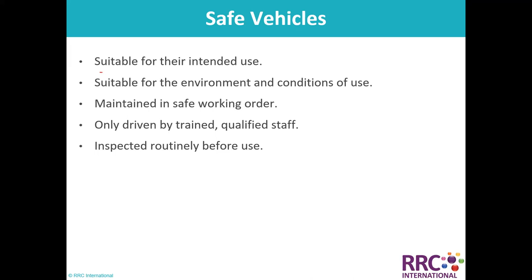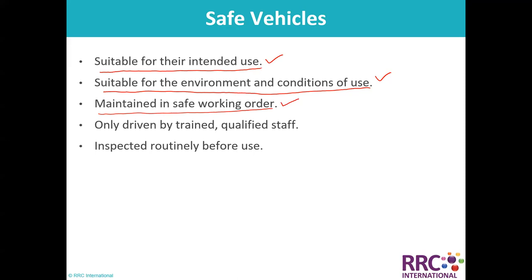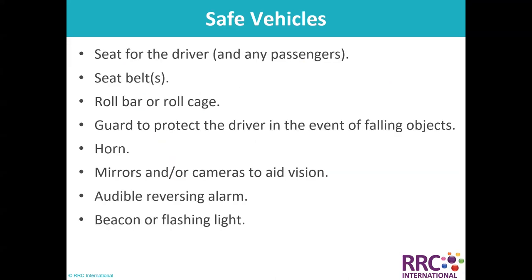For a safe vehicle: it should be suitable for its intended use only. A diesel engine forklift should not be used inside a warehouse — battery-operated forklifts should be used indoors. The vehicle must be maintained in safe working order, only driven by trained and qualified staff. Competency and certification are checked on the work permit system. There are two types of inspection: routine pre-use inspection and periodic inspection, usually by a third party.